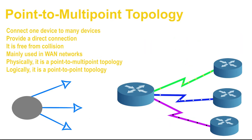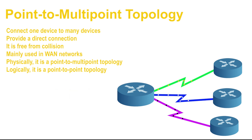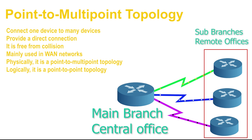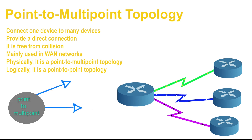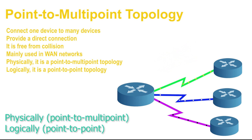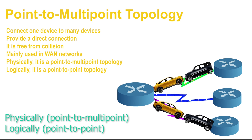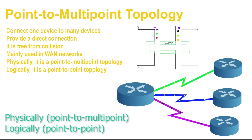A point-to-multipoint topology connects a single device to many devices and is mainly used in WAN networks. It connects one central or main branch with sub-branches. Physically, it is a point-to-multipoint layout, but logically it is a point-to-point topology. Data sent by one device does not reach all remaining devices, so devices do not share the same collision domain. It is similar to a switch-based star topology where the source and destination nodes use a logically point-to-point connection to exchange data.